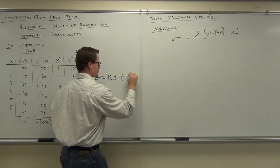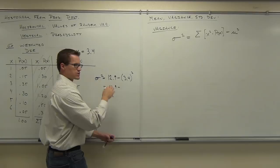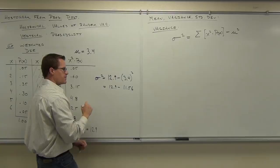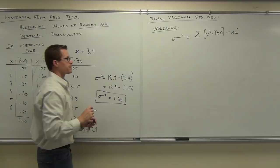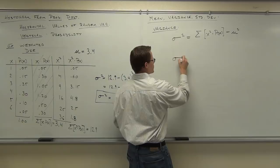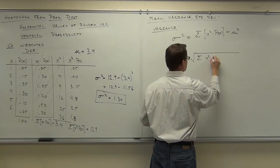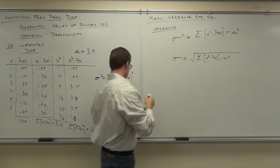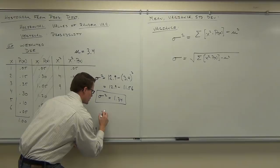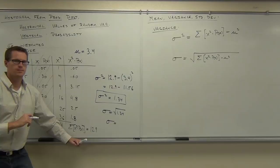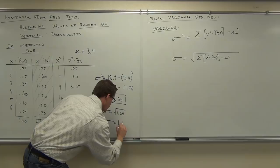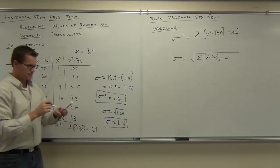So σ² = 12.9 − (3.4)² = 12.9 − 11.56 = 1.34. Our variance is 1.34. To find the standard deviation, we just take the square root of the variance. Square root of 1.34 is approximately 1.16.